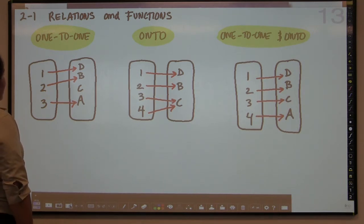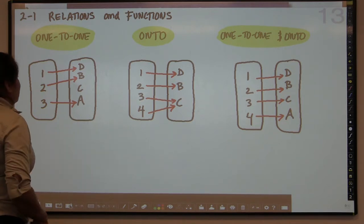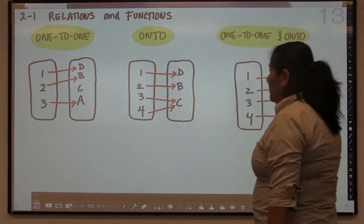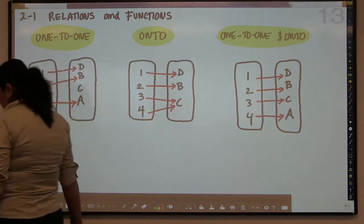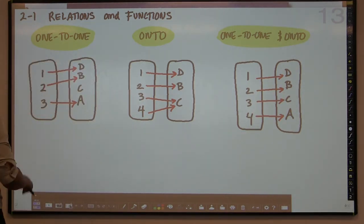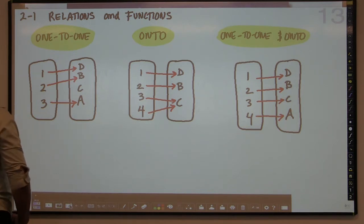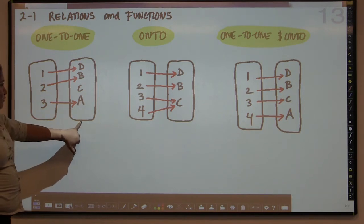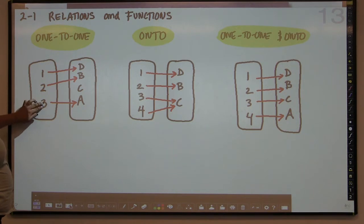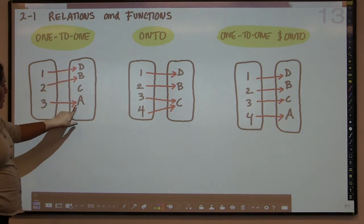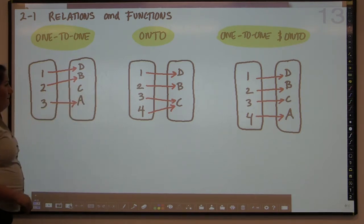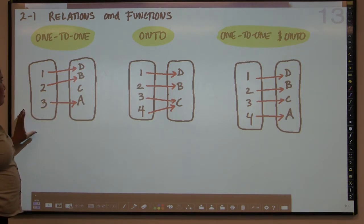We have up here three different examples of functions. This is not the first time you have been exposed to functions — we did this in Algebra 1. A one-to-one function is a function where every element of the domain gets mapped or paired to exactly one element in the range. Here are my x values — the domain — and my y values — the range. Every x value is going to one y value. Nothing is being mapped to 'c', and that's okay. This is an example of a one-to-one function.